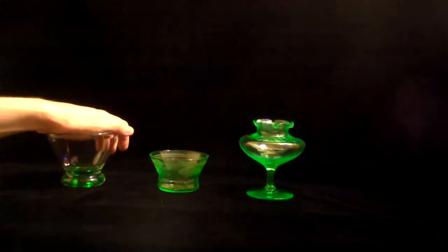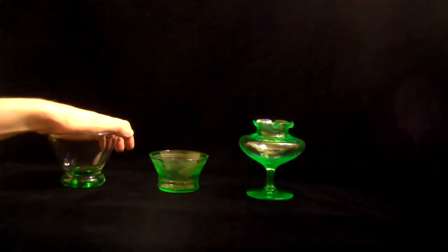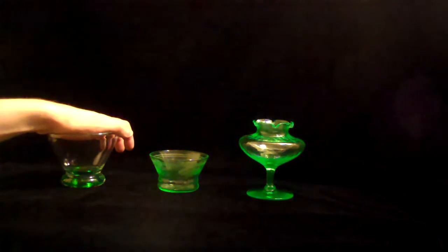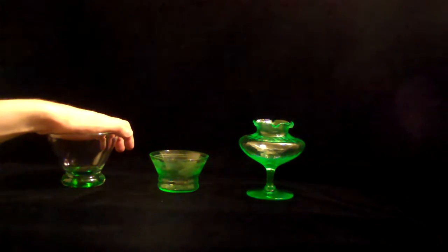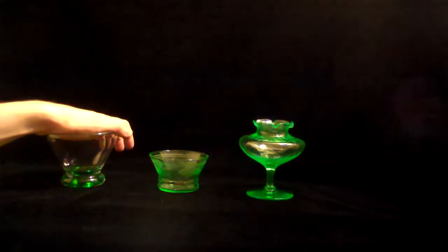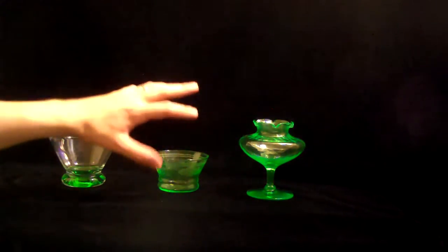By the way, if I say Vaseline glass, there are several different types. There's Vaseline, Canary, and Carnival glass. All three of those are made with uranium colorant as well, and I have a tendency to sometimes say Vaseline glass because my very first piece I ever got was Vaseline glass. This is actually Depression glass.